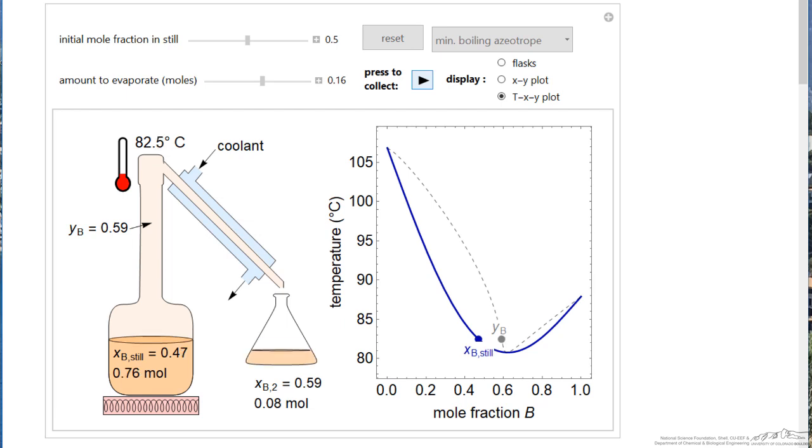So, the idea of this simulation is a simplified version of how batch distillation would be carried out, where typically we have a column, so we get better separation than we're getting in this simplified version. But hopefully this gives you a good idea of the concepts behind batch distillation.